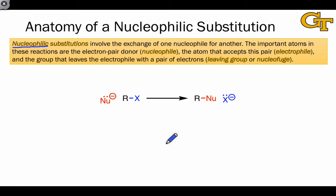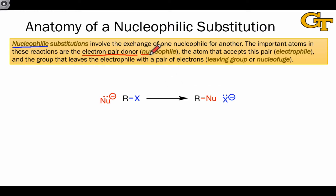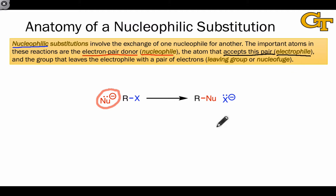This is why this is called nucleophilic substitution. There are three types of atoms or groups that are important to focus on in nucleophilic substitutions, denoted here in red, black, and blue in this general reaction scheme. The electron pair donor — the reactant molecule that donates a pair of electrons to form a new bond to R in the product — is known as the nucleophile. In this general scheme, the nucleophile is drawn in red.